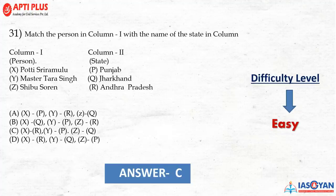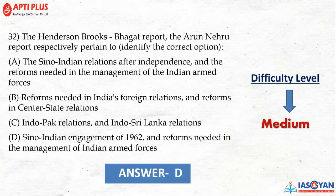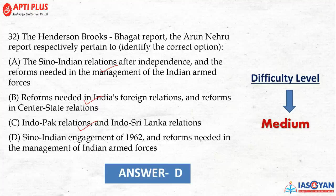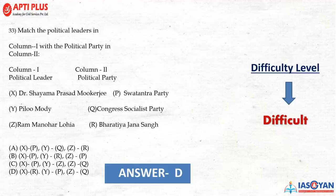Question 31: Match the column — leaders to their states. Portish from Punjab, Master Tara Singh from Jharkhand, Sibu Soren from Andhra Pradesh. The correct answer is C. Question 32: Henderson Brook Bhagat Report and Arjun Nehru Report pertain to which subjects respectively? The correct answer is D — Indo-China relations and reform needed in management of Indian armed forces, a medium level question. Question 33: Match political leaders with their parties — Shyama Prasad Mukherjee, Piloo Mody (Congress Socialist Party), Ram Manohar Lohia (Bharatiya Jana Sangh). The correct option is D.